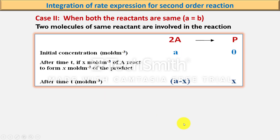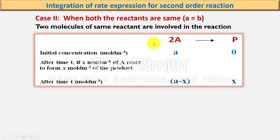Now let us take the second case, that is when both the reactants are the same — when A is equal to B. In this, two molecules of the same reactant are involved in the reaction. So let us consider A + A giving product, or 2A giving product.